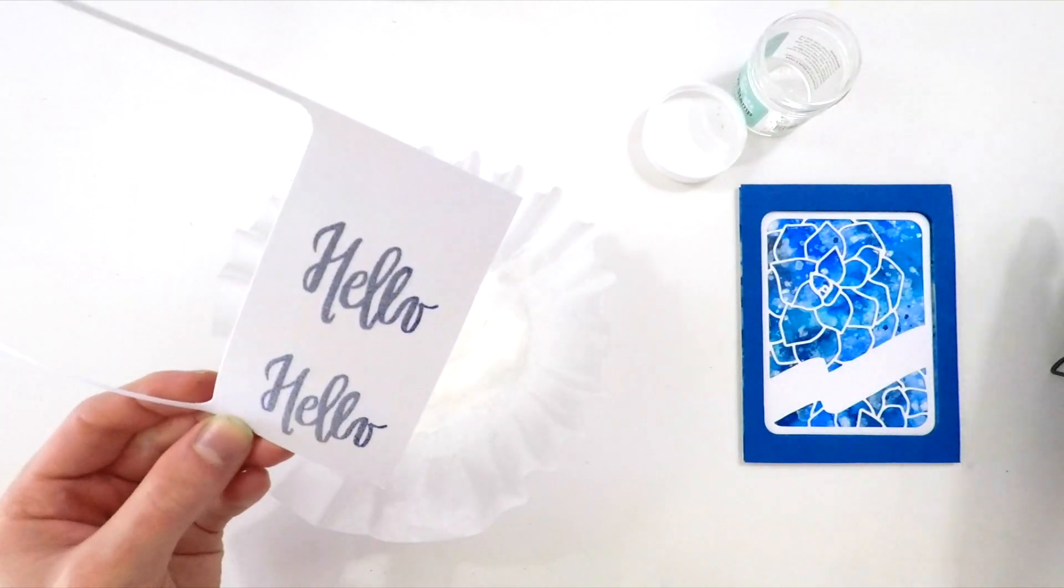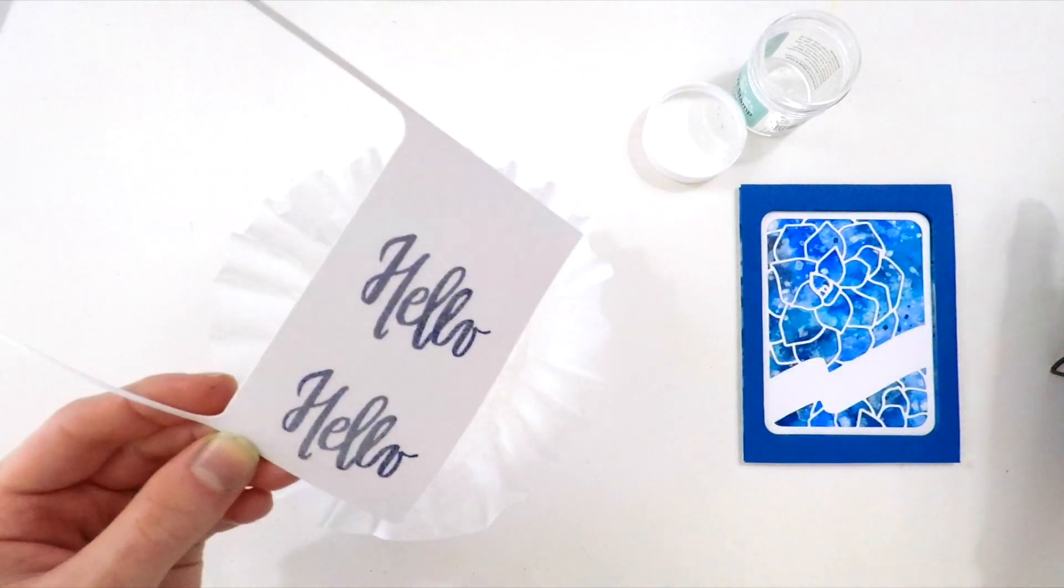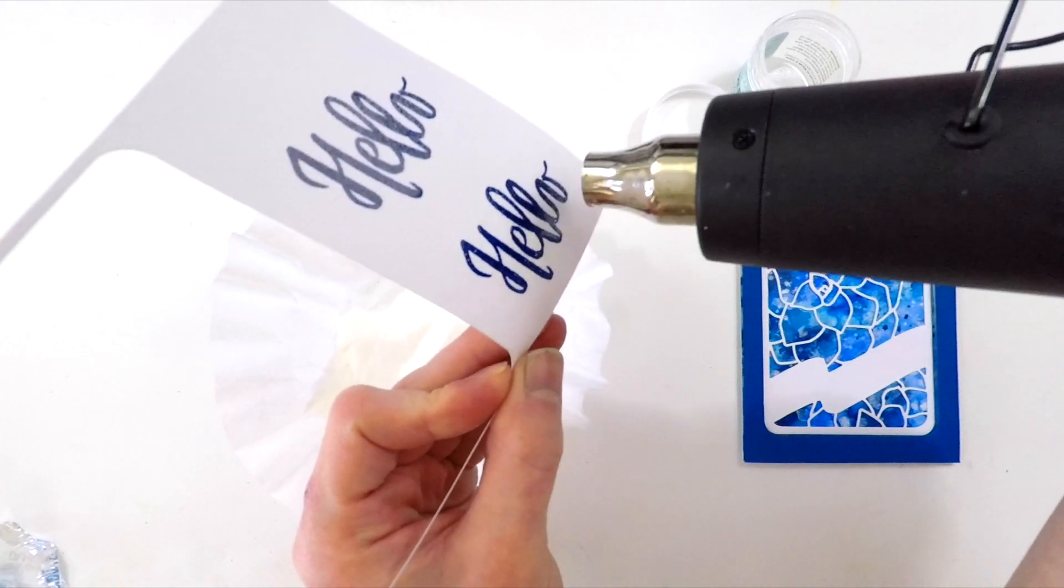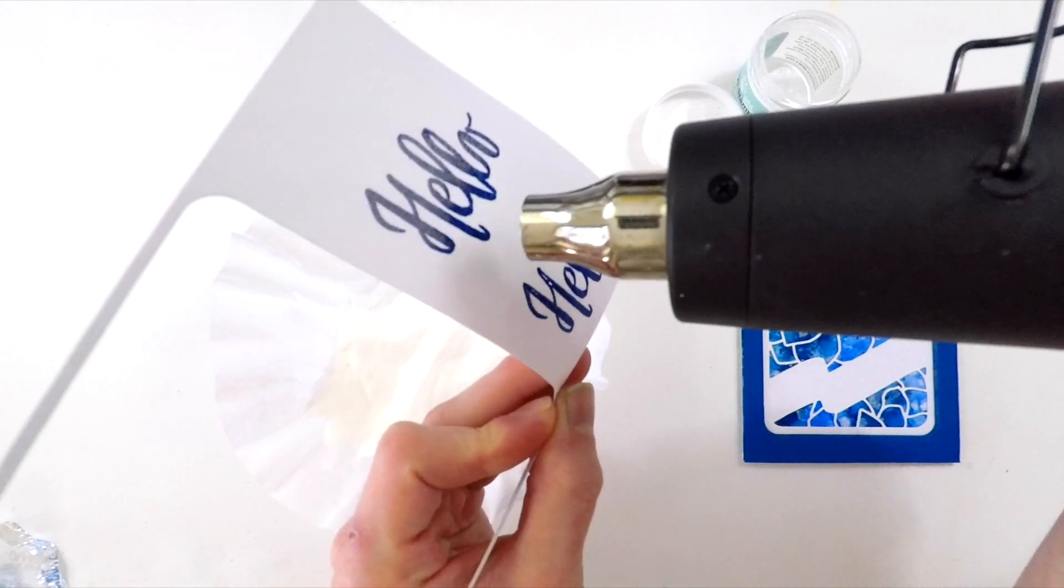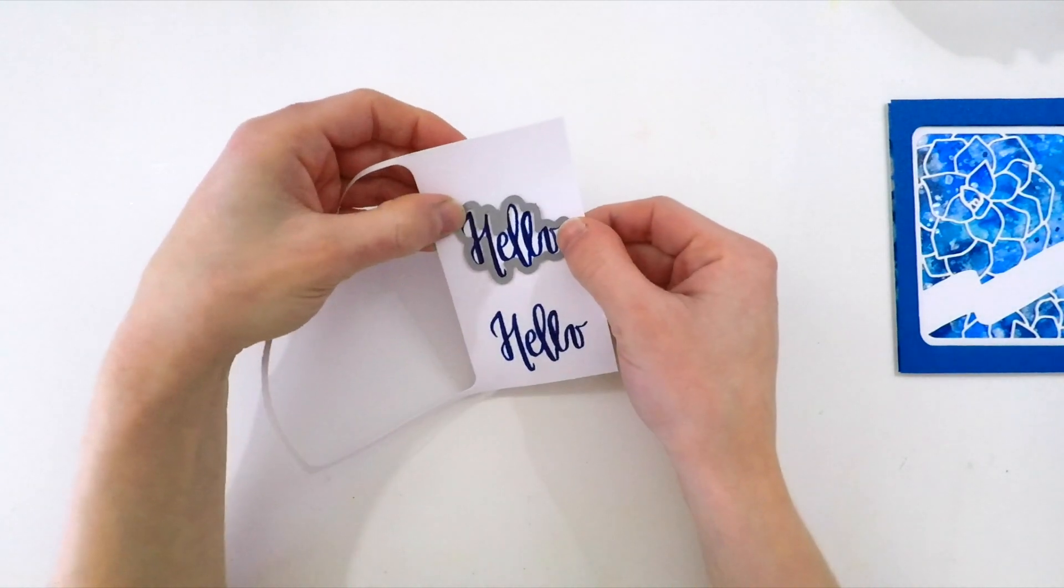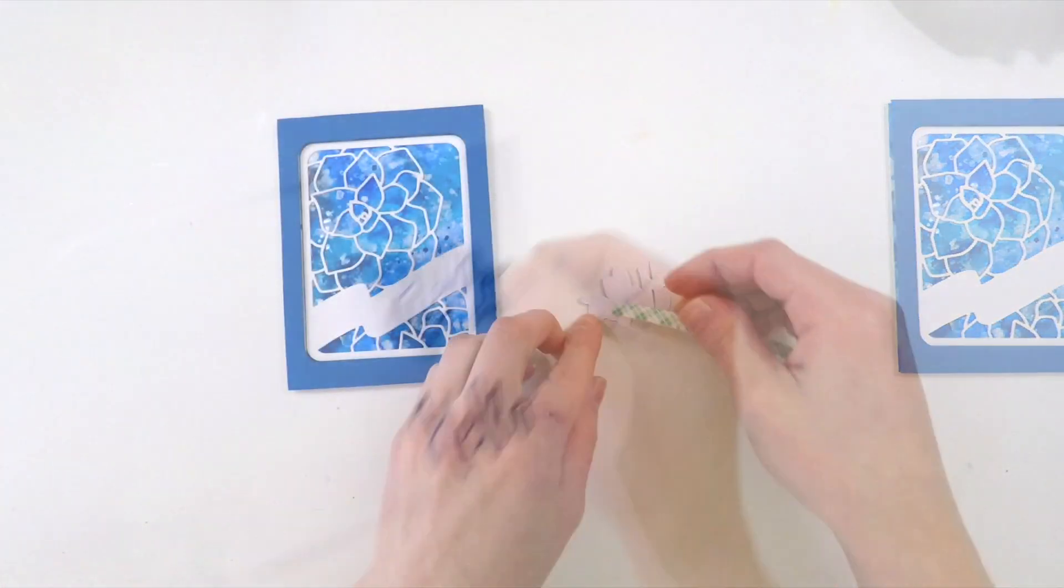Because I added all these layers of embossing powder, that creates a more dimensional sentiment, and I think it really looks beautiful. That really nice heat embossed sentiment with extra dimension looks really cool and very shiny. It also darkens up the sentiment a little bit more, which I think helped match the cards nicely.